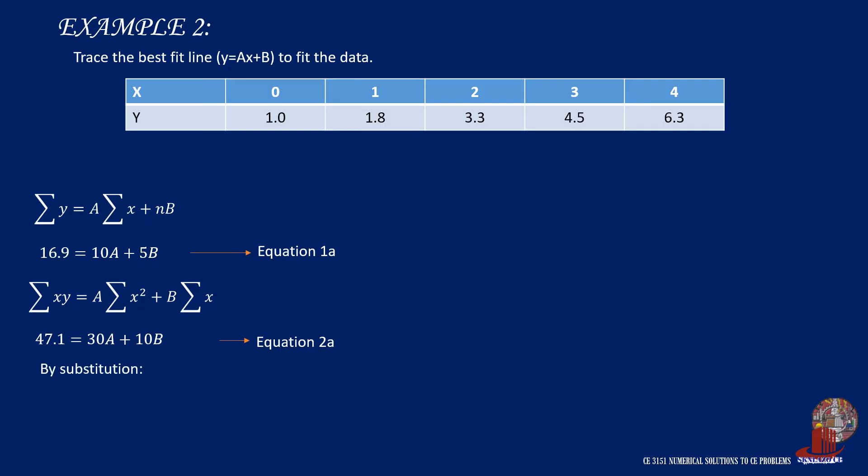b is isolated from the formula giving 4.71 minus 3a. Denote this as equation 2b.